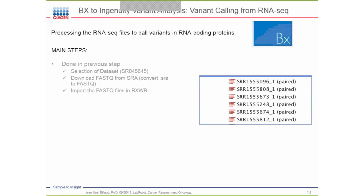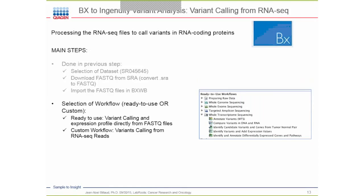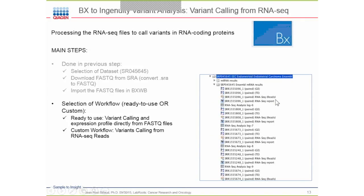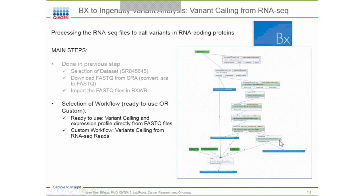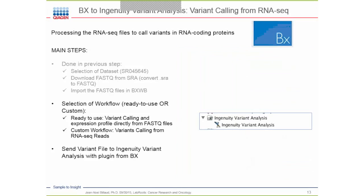We can also call variants from that RNA-seq file in RNA-coding proteins. The first steps are identical as previously — we select a workflow or custom workflow for calling variants and expression profiles from the FASTQ. I selected a custom workflow directly from the BAM files obtained from the previous expression profile analysis. This workflow looks at SNVs and INDELs, eliminates false positives and false negatives, and maps to the corresponding sequence at the gene and RNA level, then sends that to NGUnity Variant Analysis.